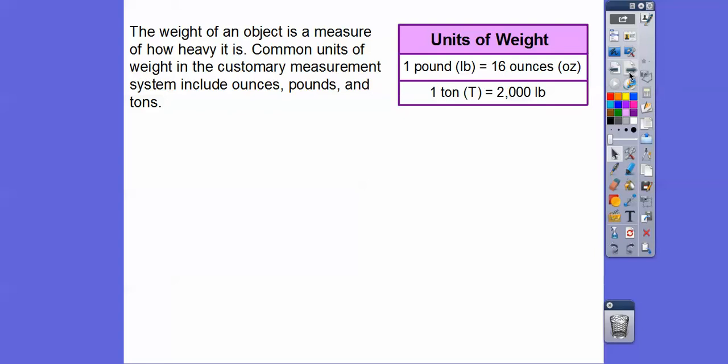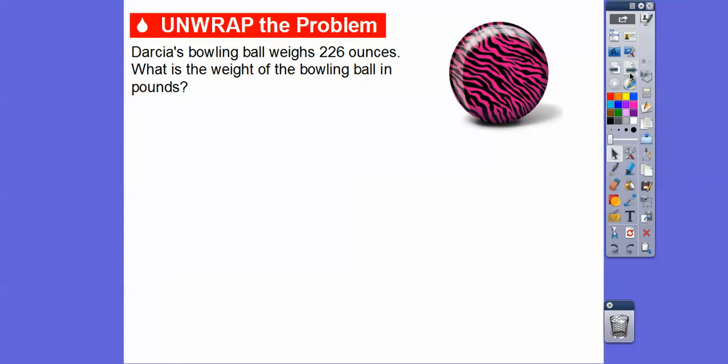The weight of an object is the measure of how heavy it is. Common units of weight in the customary measurement system are ounces and pounds and tons. One pound equals 16 ounces, and one ton, which is a capital T, equals 2,000 pounds. Pounds are abbreviated with LB and ounces are abbreviated with OZ.